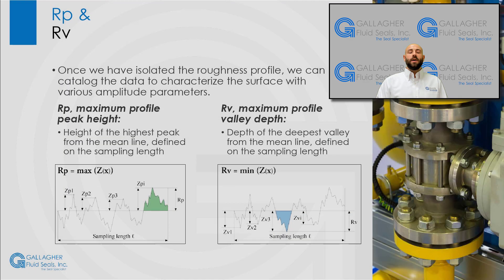In our previous webinar, we discussed filtering and creating separate waviness and roughness profiles. Once we have isolated the roughness profile, we can then catalog the data into multiple equal sampling lengths to start characterizing the surface with various amplitude parameters.